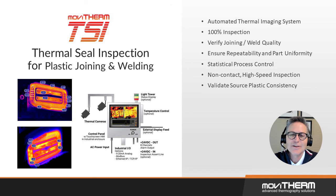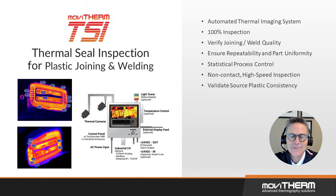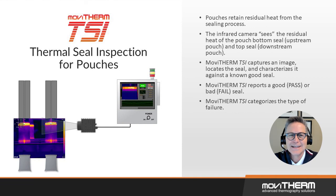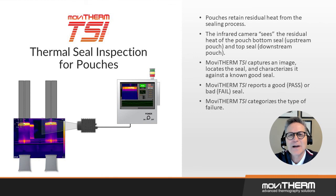Plastic joining and welding are other processes that can benefit from TSI inspection, verifying the joining and weld quality of plastics and plastic composites. The system can provide real-time feedback to control the temperature levels of heating elements. TSI can also be used to evaluate pouch seals formed by heat and pressure. Poorly formed seams that may result in leakage are easily identified by comparing their thermal profiles to the profiles of known non-leakers.